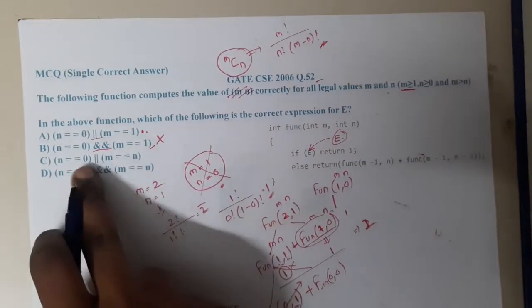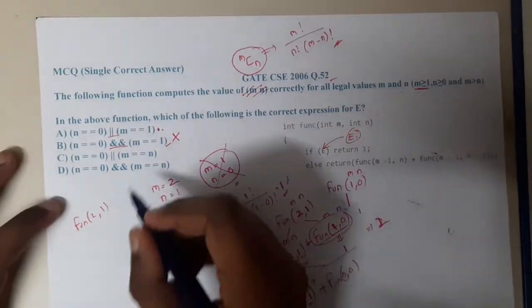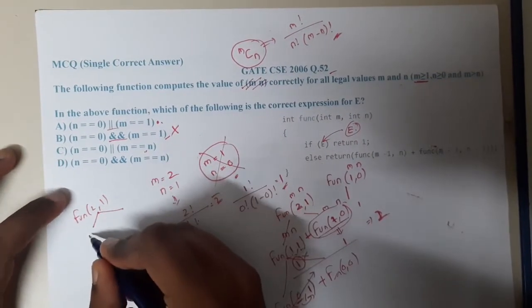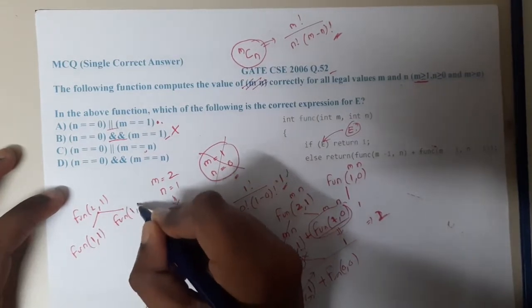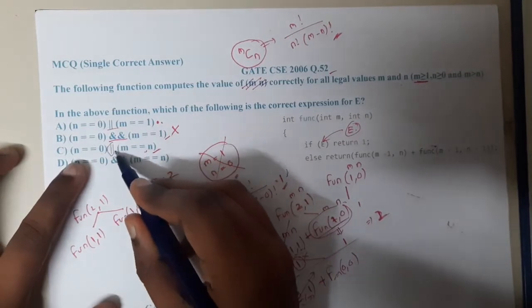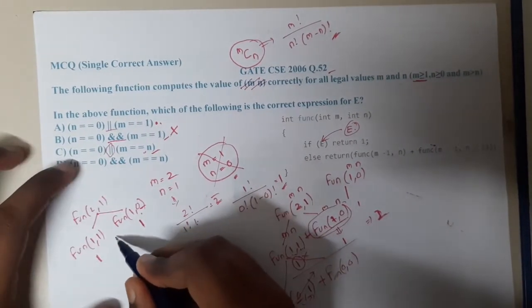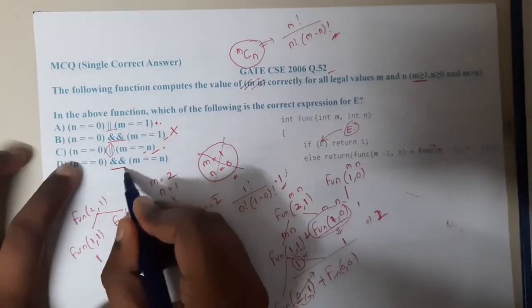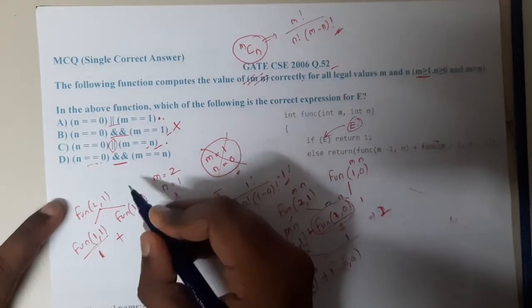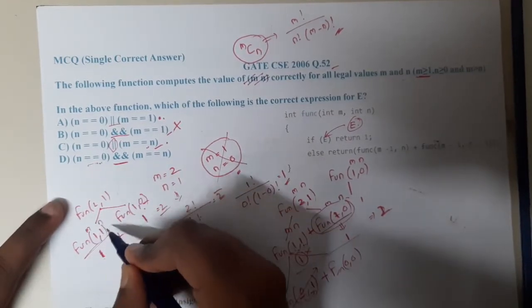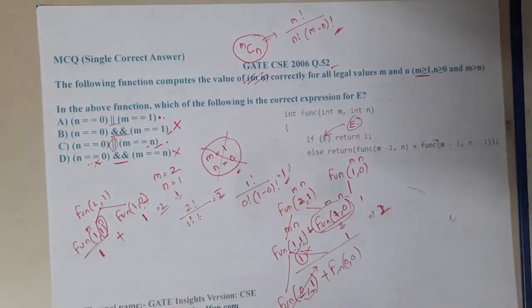Let us check the next option with func(2, 1). It produces func(1, 1) and func(1, 0). With an OR condition and m == n added, func(1, 1) satisfies m == n and returns 1, and func(1, 0) also returns 1, giving total 2 — so this option is still in the race. The option with AND on both conditions fails because n == 1 makes that false, so that option is eliminated.